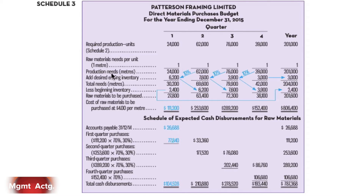Multiply the two together to get production needs in meters: 24,000 meters in Q1, 62,000 meters in Q2, and so on. We also have a desired ending inventory of 10% of next quarter's needs - just in case there's a supply disruption or shipping delay, we don't want to be caught off guard. We want production to proceed smoothly, so we end each quarter with at least 10% of next quarter's needs, setting our total needs in meters for every quarter.